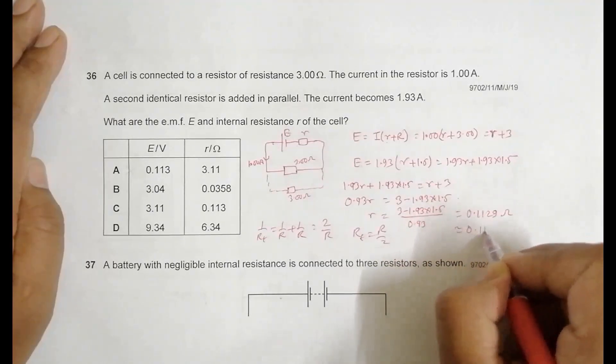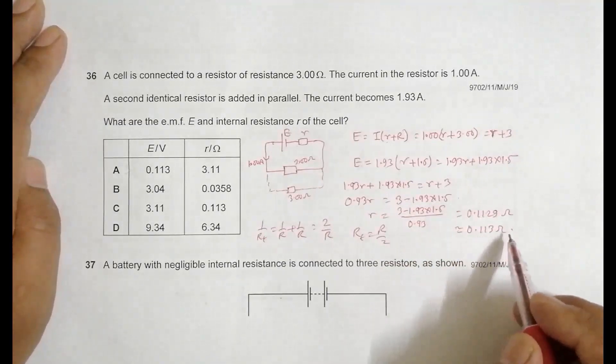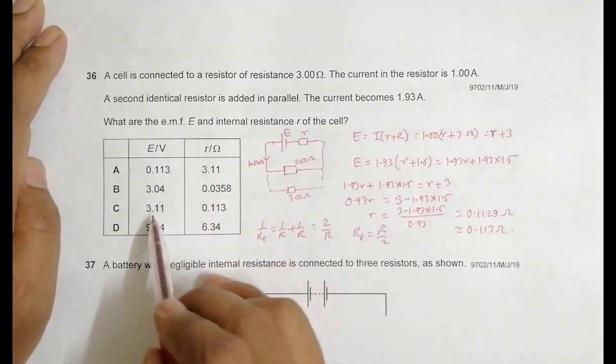That's nearly equal to 0.113 ohm. So this small r, or the inner resistance, is equal to 0.113 ohm. This choice is available only in choice number C.